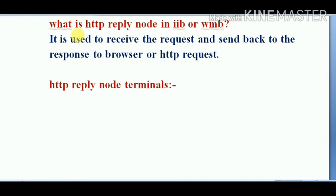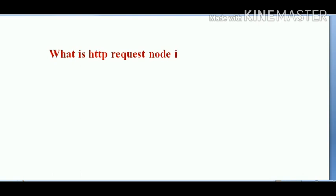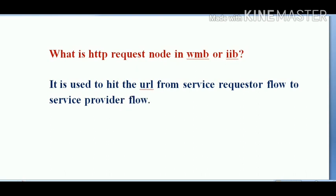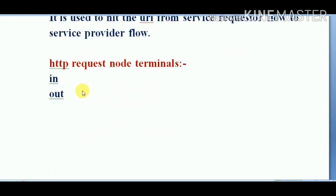What is the HTTP Request node in IIB or WMB? It is used to receive the URL from the service requester flow and pass it to the service provider flow. The HTTP Request node contains the following terminals: in, out, error, and failure.